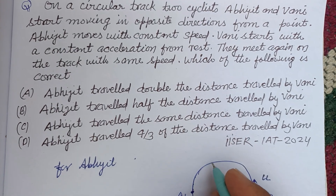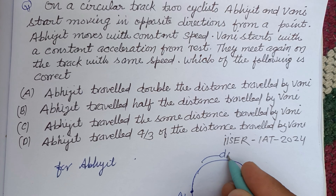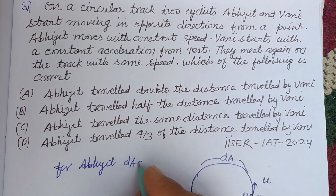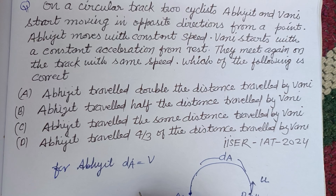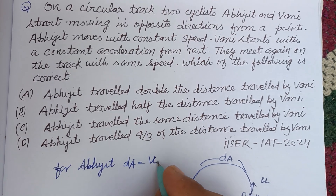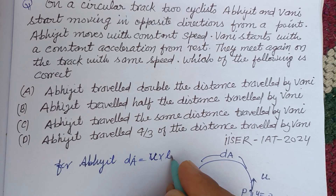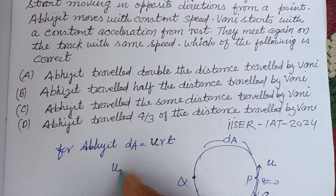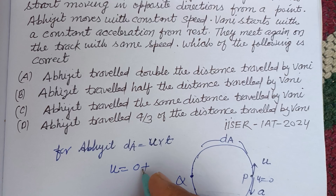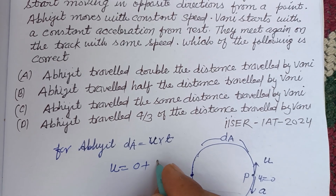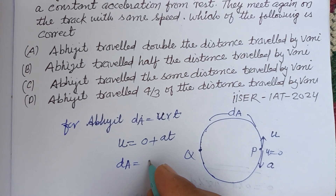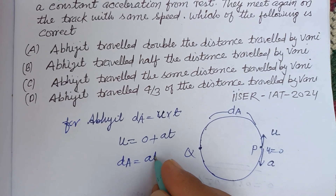For Avjit, let the distance covered be d_A. Since Avjit moves at constant speed u with initial speed u and zero acceleration, d_A equals u into t, therefore d_A equals u·t.